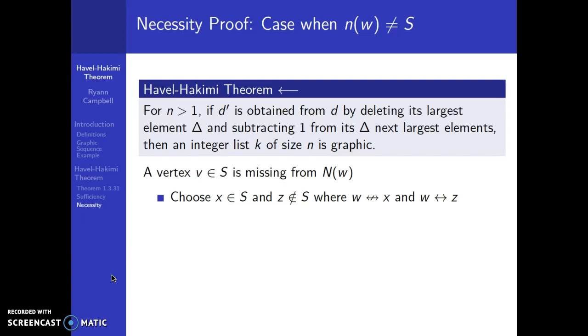Vertex w cannot be adjacent to x, and vertex w has to be adjacent to z. So z is in the neighborhood of w but it's not in S. So what we really want to do is switch those two vertices so that z is in S and x is not in S.